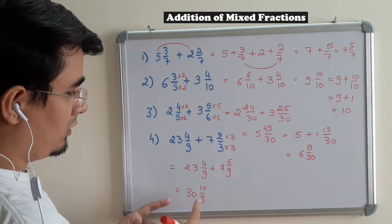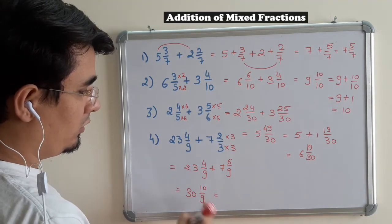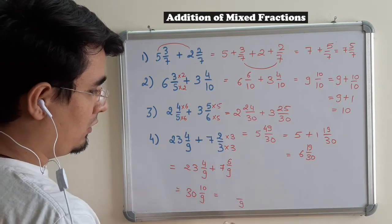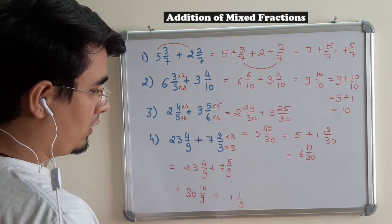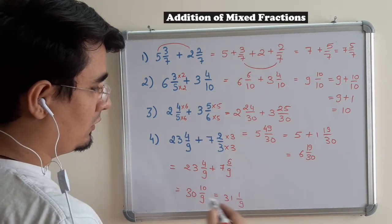Again, a similar thing happened. It is a mixed fraction. So I know it will be 9, 1, 1. And 30 is already there. 30 plus 1 is 31. This is the answer.